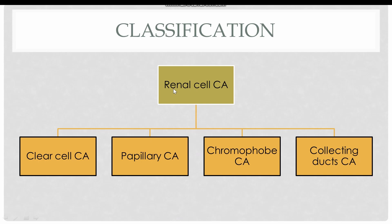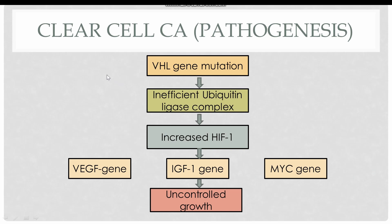Renal cell carcinoma is classified into subtypes based on histological appearance. The first and most common is clear cell carcinoma, then there is papillary carcinoma, chromophobe renal carcinoma, and collecting duct carcinoma. Clear cell carcinoma constitutes almost 70 to 80 percent of all renal cell carcinomas.